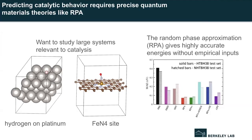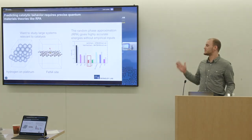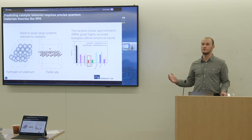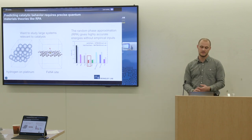In this graph on the right, RPA is in this box here, where we're plotting the mean absolute energy error across a couple of different test suites compared to a bunch of other workhorse software implementations. We see RPA does very well without resorting to any empirical inputs.